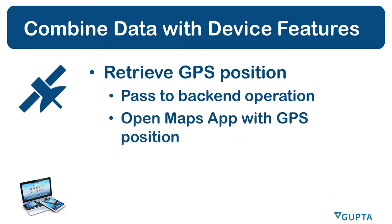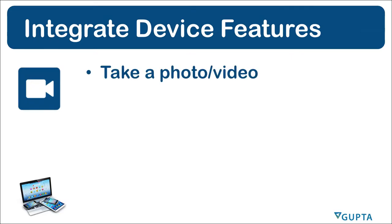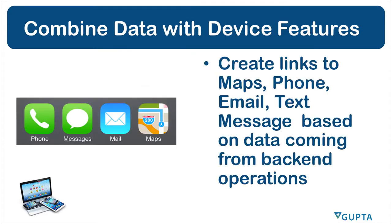You can open the maps application with the current GPS position. You can take a photo or video, and you can upload that photo or video for further processing. And of course you can create links to maps, phone, email, and text messages based on data coming from back-end operations.